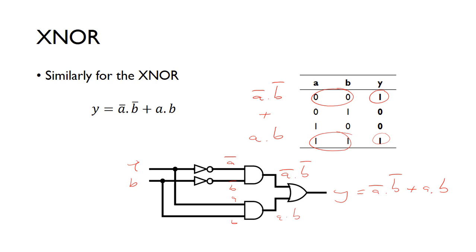So you can see from the truth tables, you've got the SOP expressions, and then from that you can just create the circuit implementation.